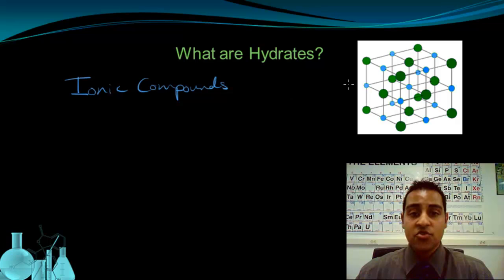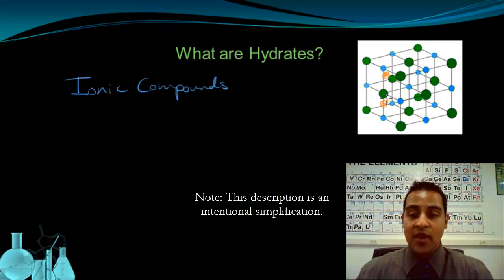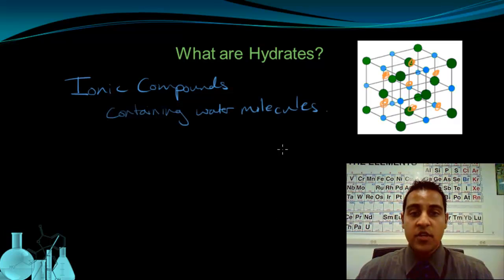So you can imagine that within these cubic crystalline shapes, we have water molecules trapped inside, caged by the positive and negative ions of the salt. So we call these particular kinds of ionic compounds or ionic salts hydrates or hydrated salts.